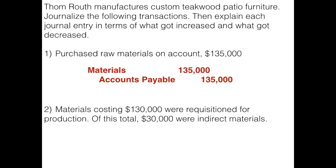In number two, materials costing $130,000 are requisitioned for production. Requisition simply means that the work-in-process department is saying they need more materials. Of that total $130,000, $30,000 were indirect materials, which means $100,000 is direct material. We have to remember where direct materials go and where indirect materials go from our prior discussion of the flow of those costs.